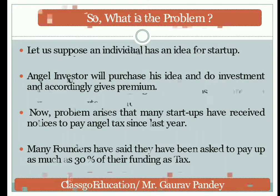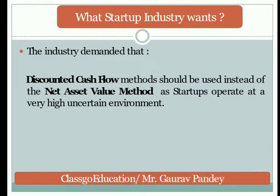Startups face very high probability of uncertainty. The industry suggests that the Discounted Cash Flow method should be used instead of the Net Asset Value method. The DCF method is basically a projection of assets and liabilities for five years. That projection is highly uncertain — if a company performs well it gets profit; if not, it won't. So how is it possible to levy 30 percent tax?